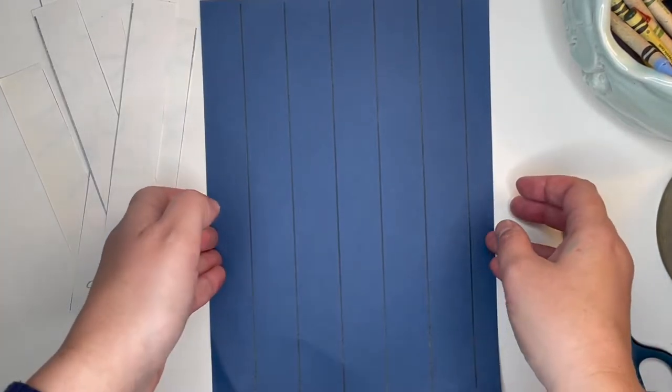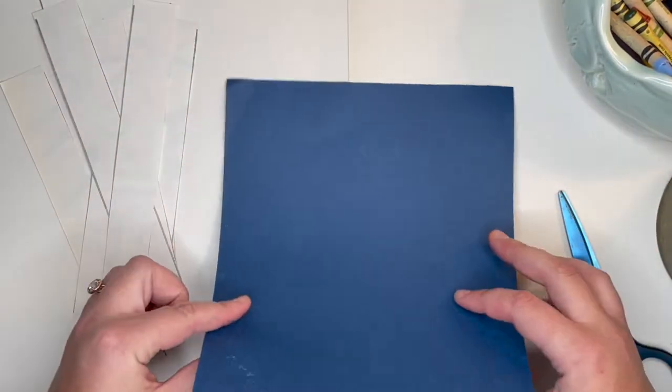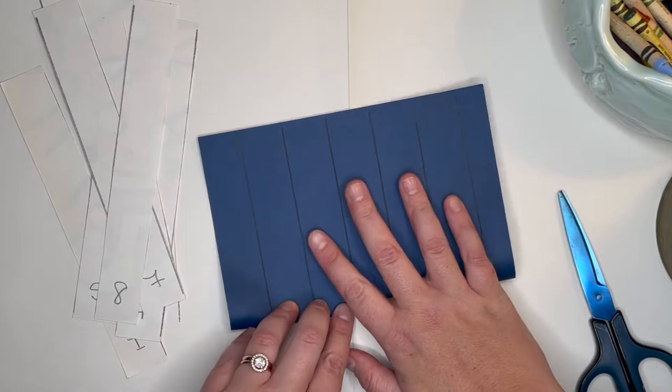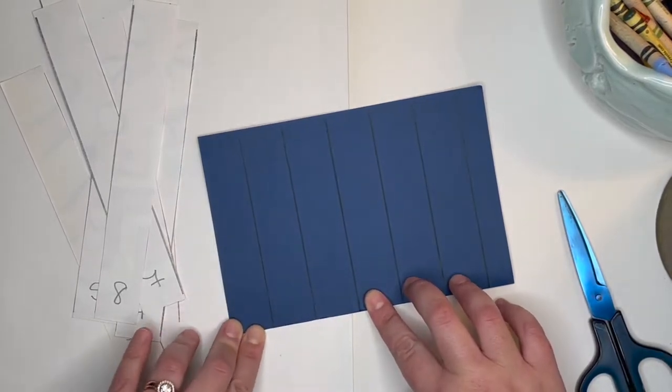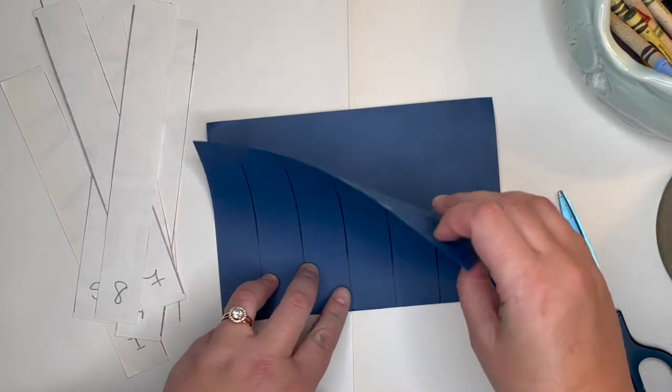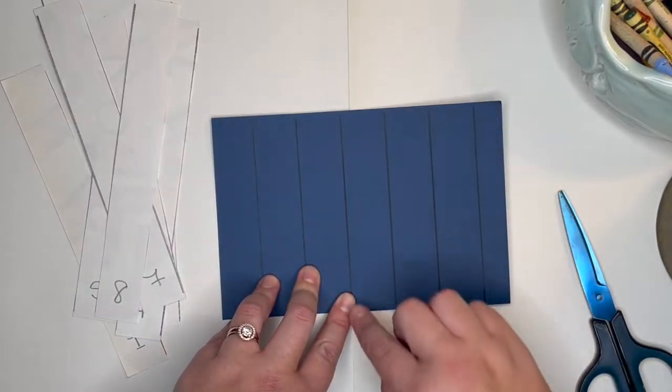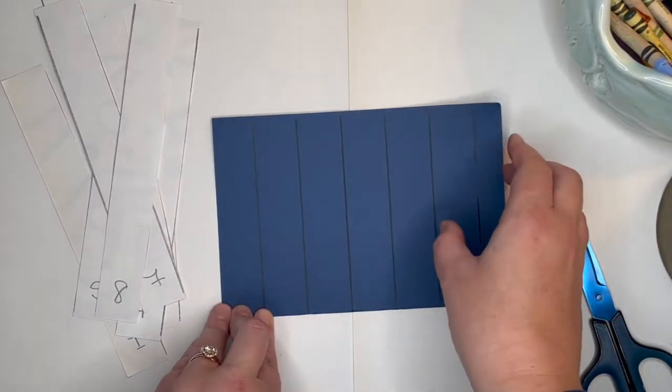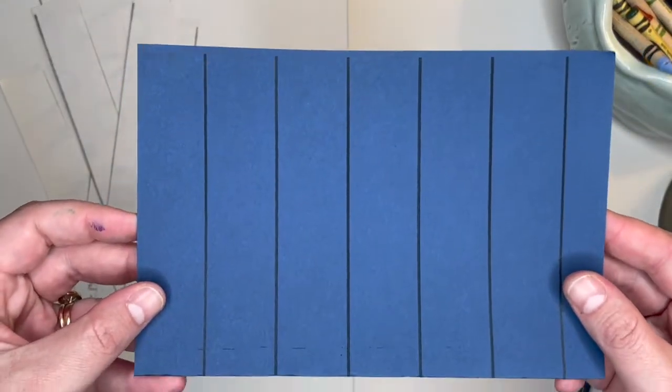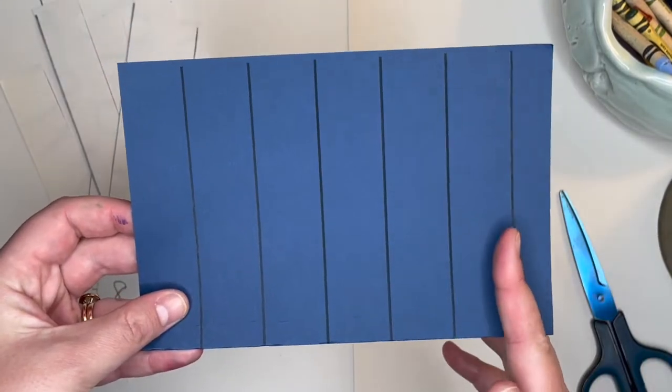The first thing that we should do is please fold your paper in half so that the lines are going up and down. Your paper should have a folded side and an open side. We are going to be cutting our paper on the folded side.